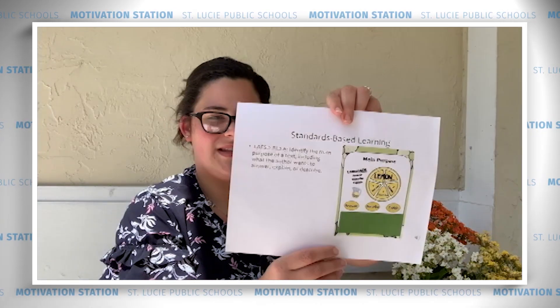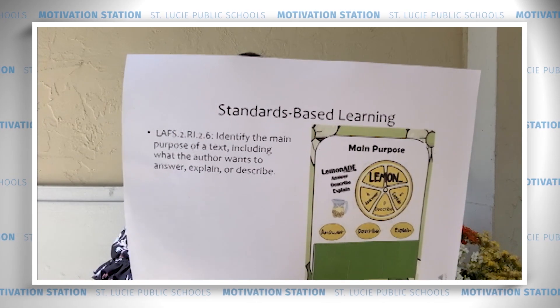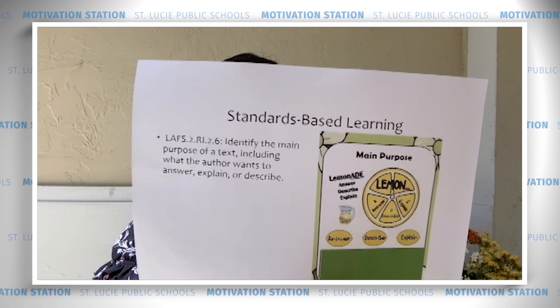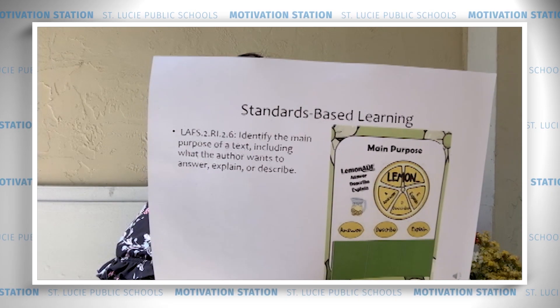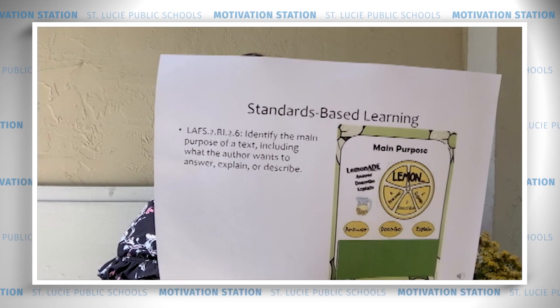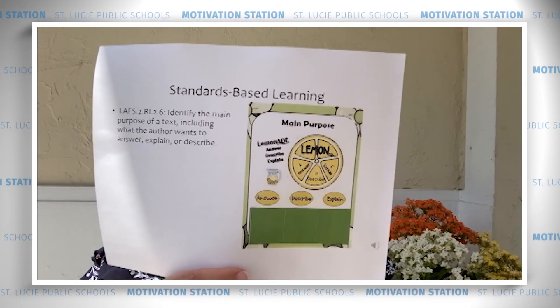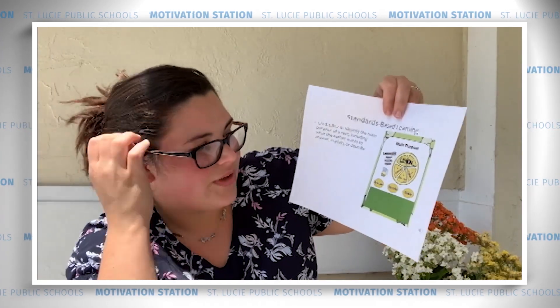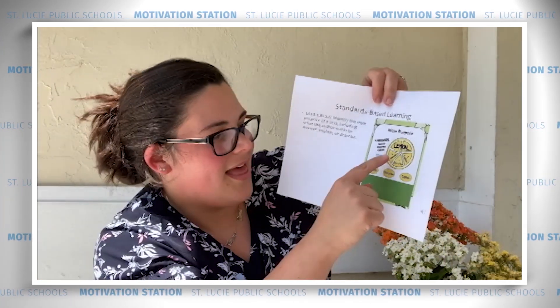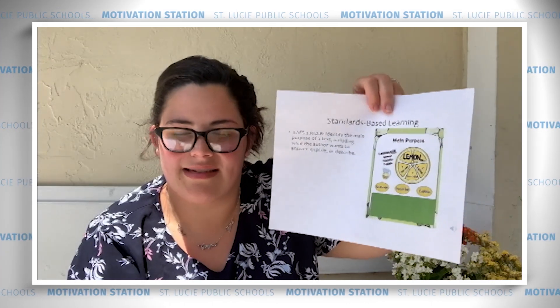Our focus for last week was standard RI 2.6, where we were identifying the main purpose of a text, including what the author wants to answer, explain, or describe. Our focus chart included this main purpose lemon chart, and I love it because it really makes you think about answering, describing, and explaining, and what that looks like within a text.